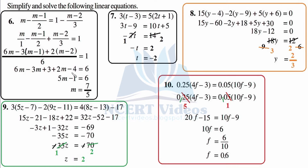Now let's solve the left-hand side. 6m minus 3m gives us 3m, and 3m plus 2m gives us 5m. For the constants we have 3 and minus 4 — different signs, so we subtract: 3 minus 4 gives minus 1. So we have 5m minus 1 equals 6.